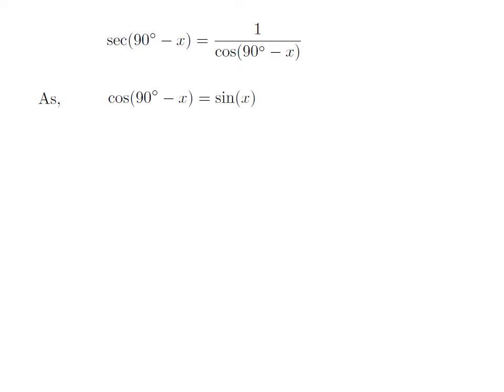As we know, the trigonometry identity cosine of 90 degree minus x is equal to sine of x. The proof of this trigonometry identity has been explained in the video appearing in the upper right corner. The URL of the video has also been mentioned in the description section.